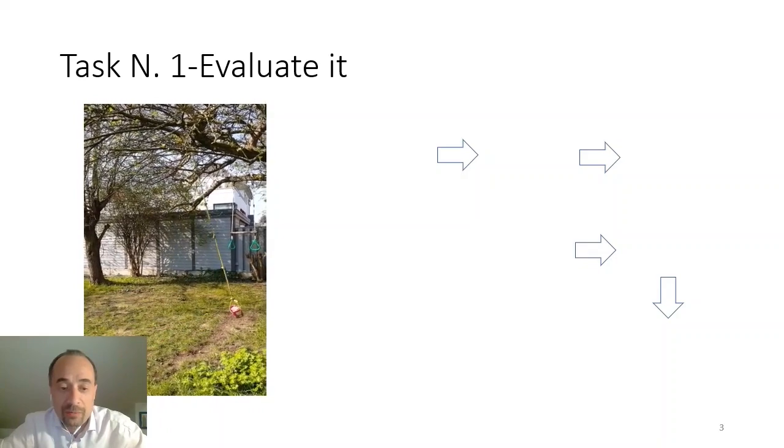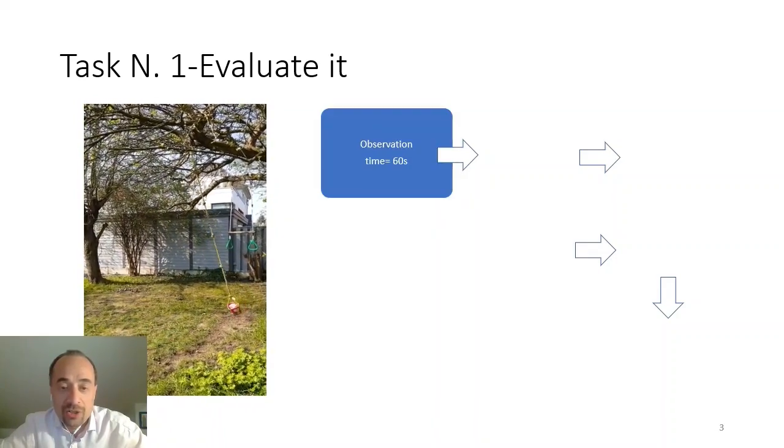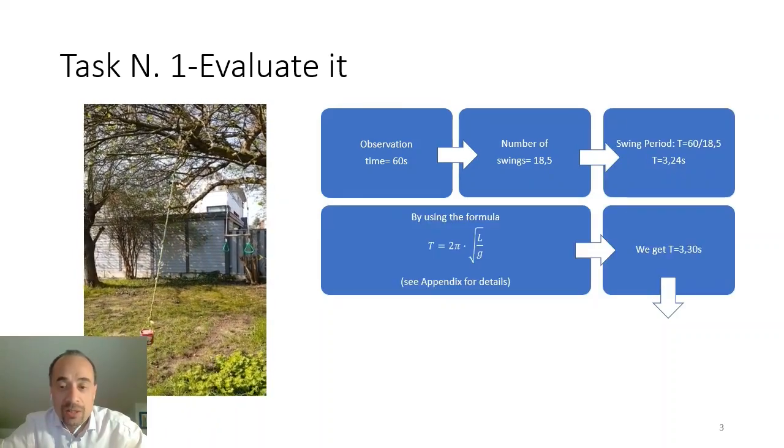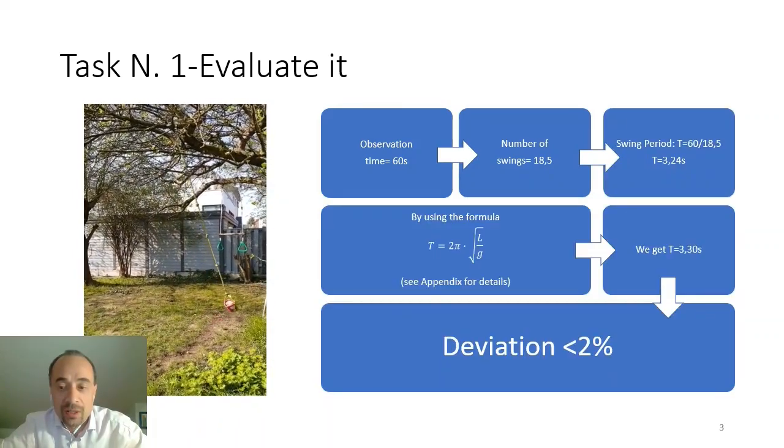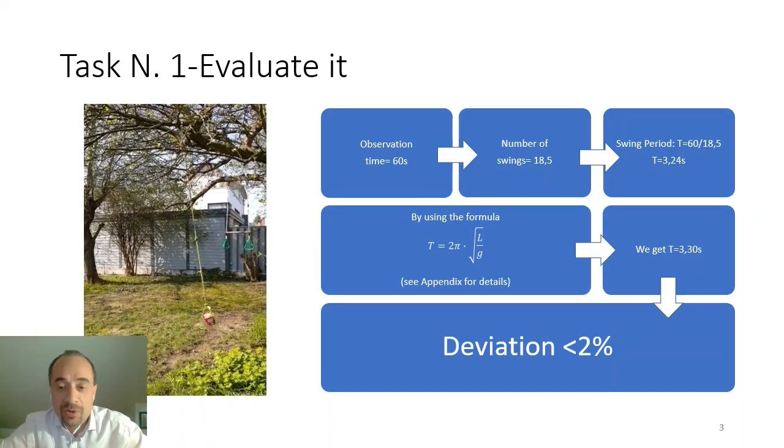We leave the pendulum swing for a certain time. How much? 60 seconds. We got 18.5 swings in a period of 3.24 seconds.